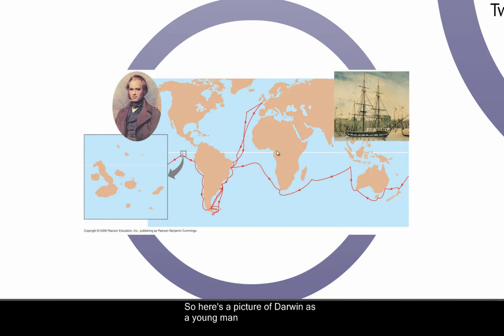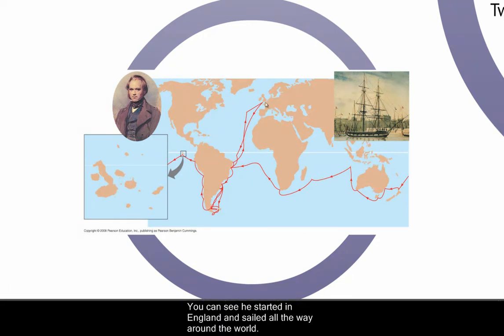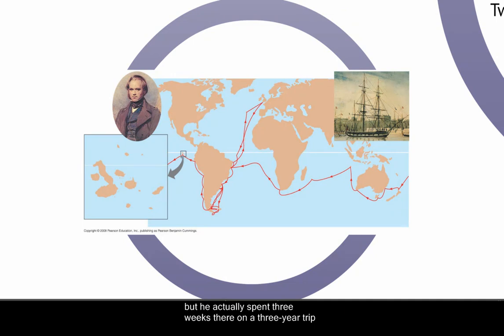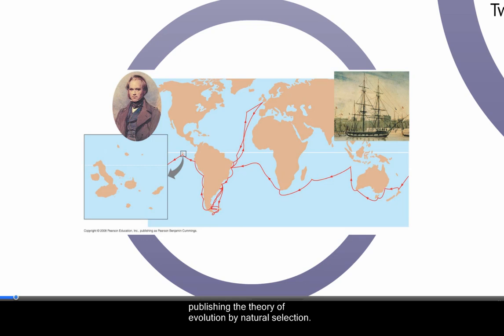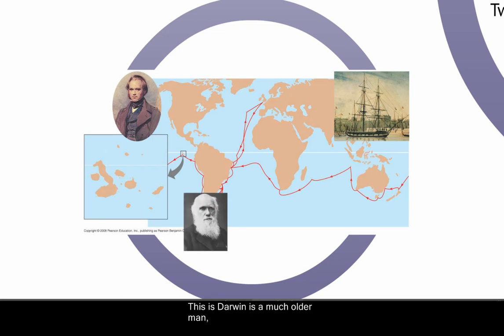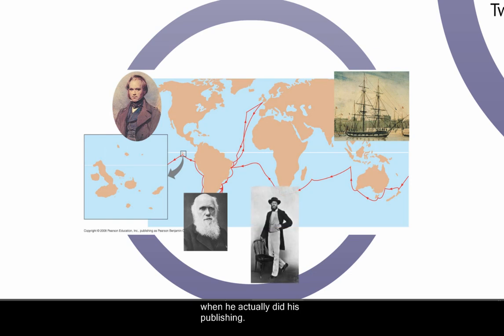Here's a picture of Darwin as a young man, and this is the ship he sailed on during his famous voyage on the HMS Beagle. You can see he started in England and sailed all the way around the world. He's most famous for the time he spent in the Galapagos Islands, but he actually only spent three weeks there on a three-year trip, spending a great deal more time in South America. He took copious notes about what he saw, made a lot of collections, and then thought about those notes and collections for about 30 years before publishing the theory of evolution by natural selection.